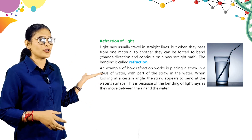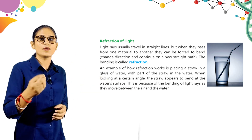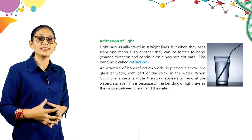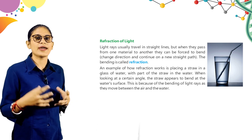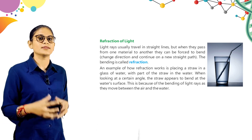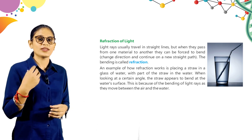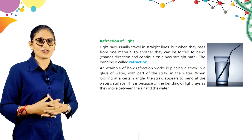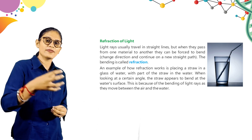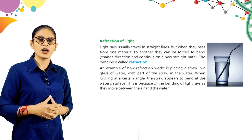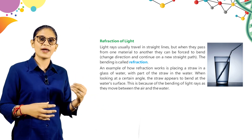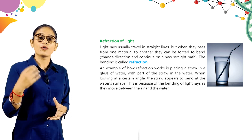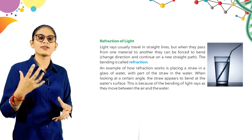Here is refraction of light. Light rays usually travel in straight lines, but when they pass from one material to another, they can be forced to bend, change direction, and continue on a new straight path. This bending is called refraction. When a light ray travels in a straight line but changes material — for example, from liquid to solid — the light bends a little, and after that it starts travelling in a straight line again. That bending is called refraction.